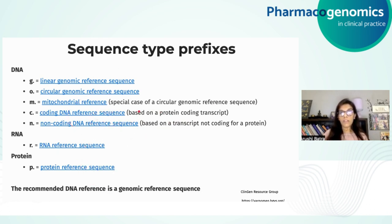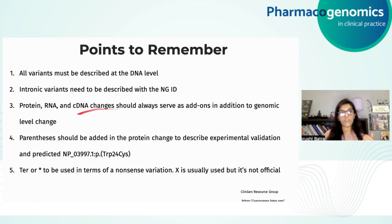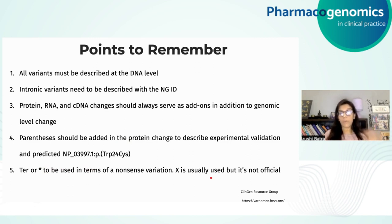The major points to remember are: all variants must be described at the DNA level; intronic variants need to be described with the NG ID; protein, RNA, and cDNA changes should always serve as add-ons in addition to genomic-level change; parentheses should be added in protein changes to describe experimental validation and predicted NP IDs; and for nonsense variations or stop codons where the mutation leads to stop codon incorporation, Ter or * (star) is to be used — X is often used in publications but is not officially recommended by the HGVS nomenclature.